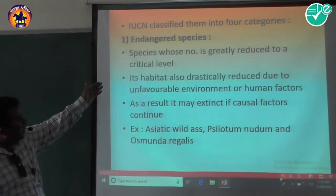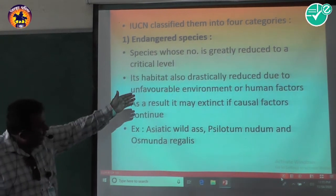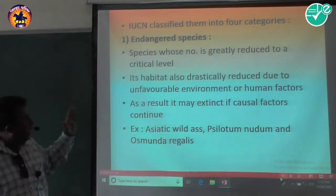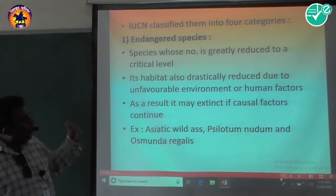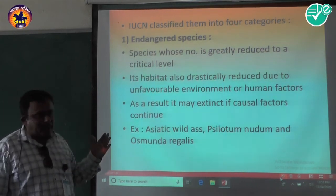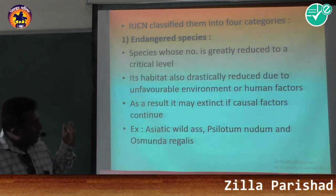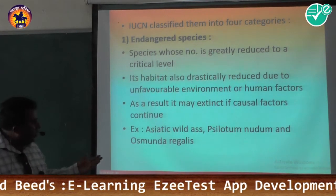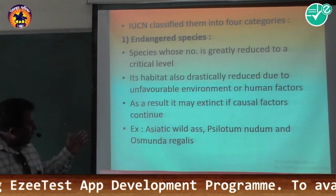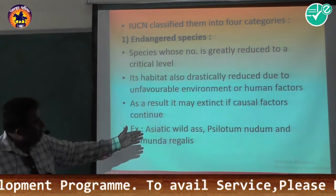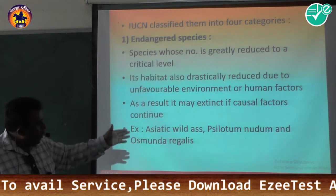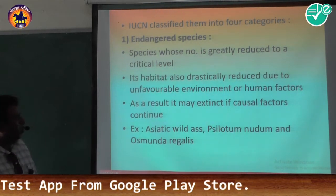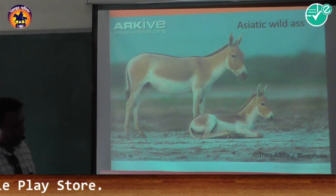The first category is Endangered Species, whose numbers are greatly reduced to a critical level and whose habitats are also drastically reduced due to unfavorable environmental or human factors. As a result, they may become extinct if causal factors continue. Examples include the Asiatic wild ass, Psilotum nudum, and Osmunda regalis.